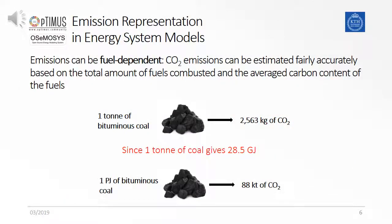If we consider the emissions as fuel-dependent, then we can estimate the amount of emissions based on the type of fuel. For example, one tonne of bituminous coal gives us 2,563 kilograms of carbon dioxide. We can also calculate the amount of greenhouse gas emissions per energy — for example, one petajoule of bituminous coal would give us 88 kilotons of carbon dioxide.